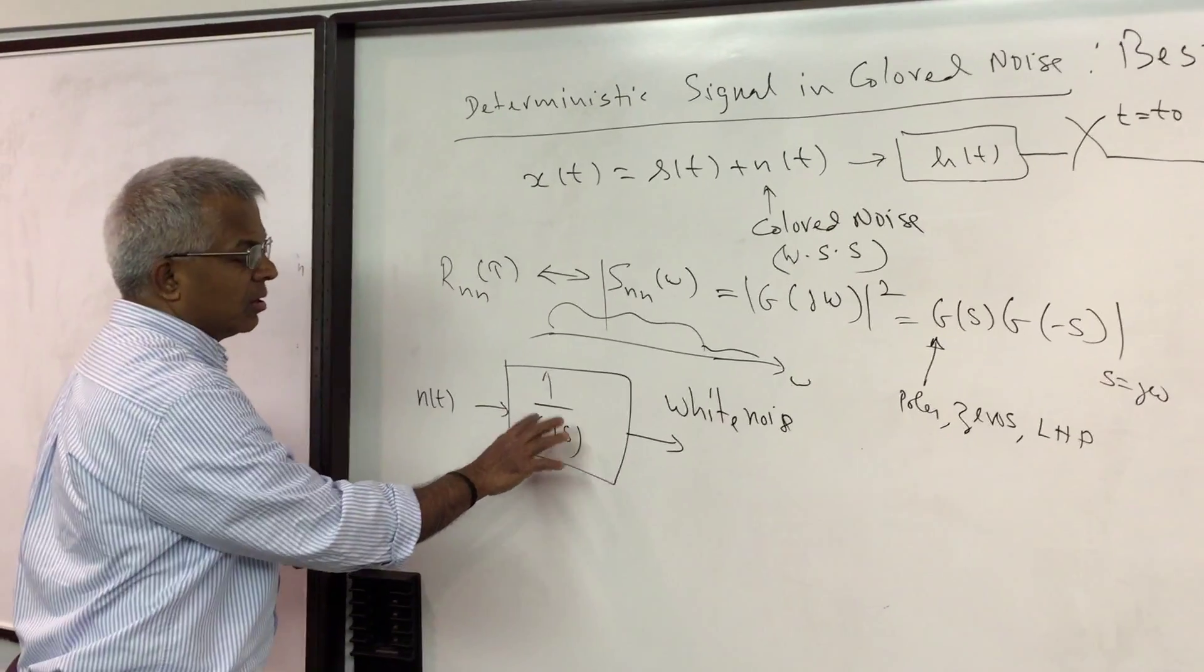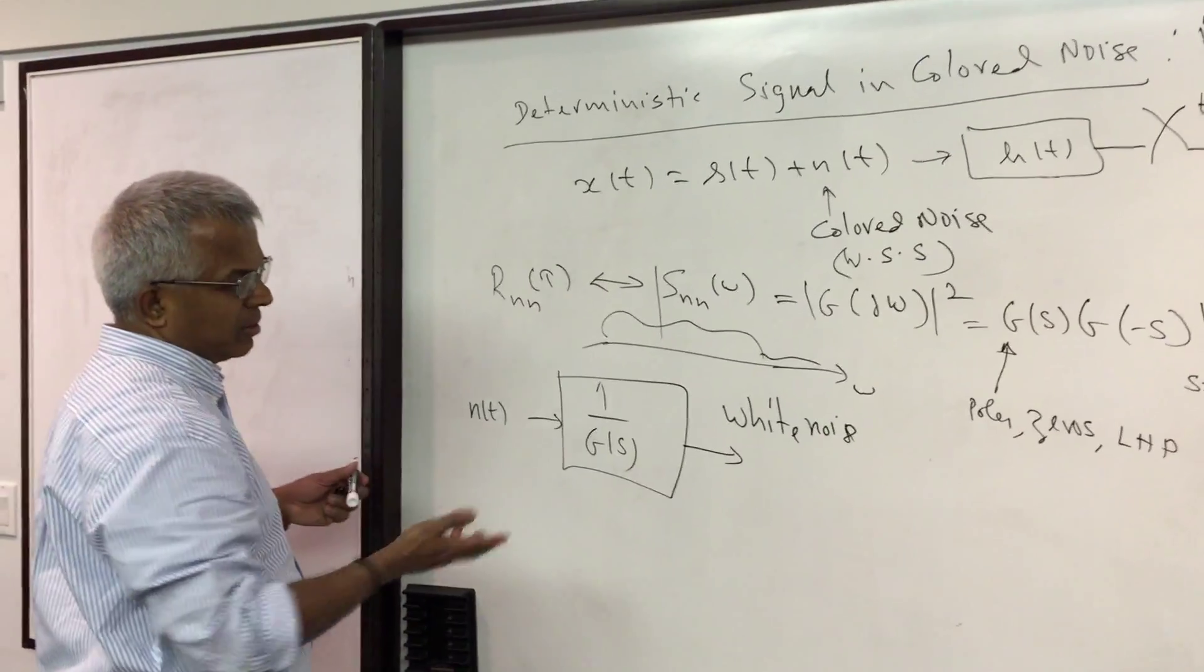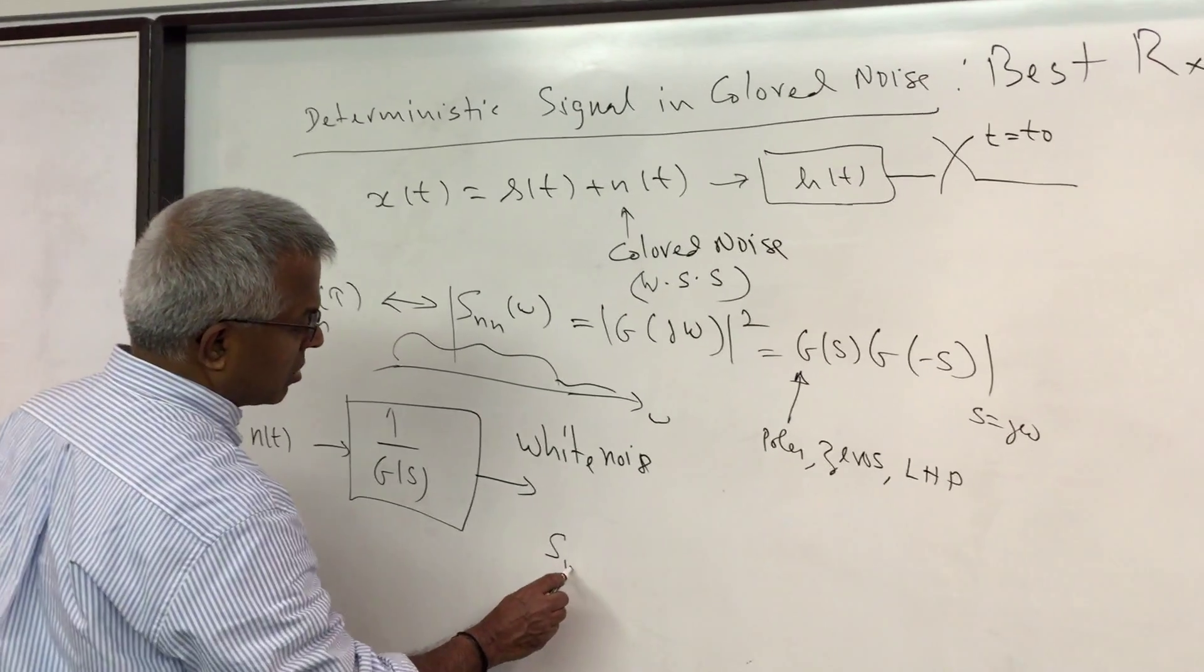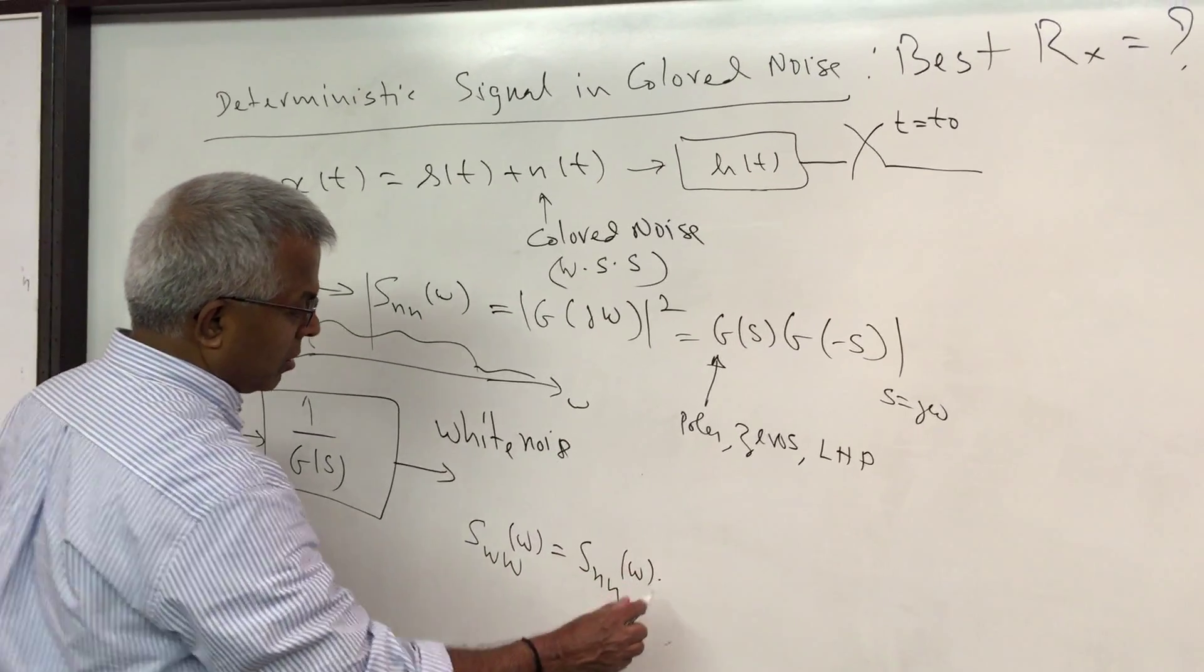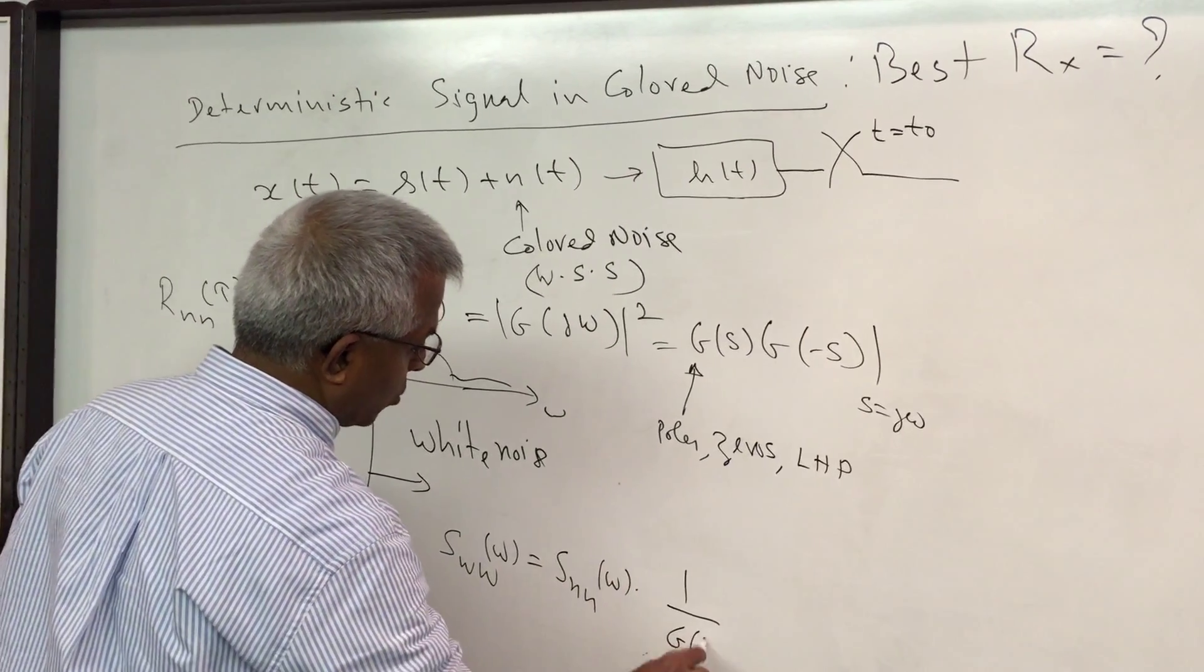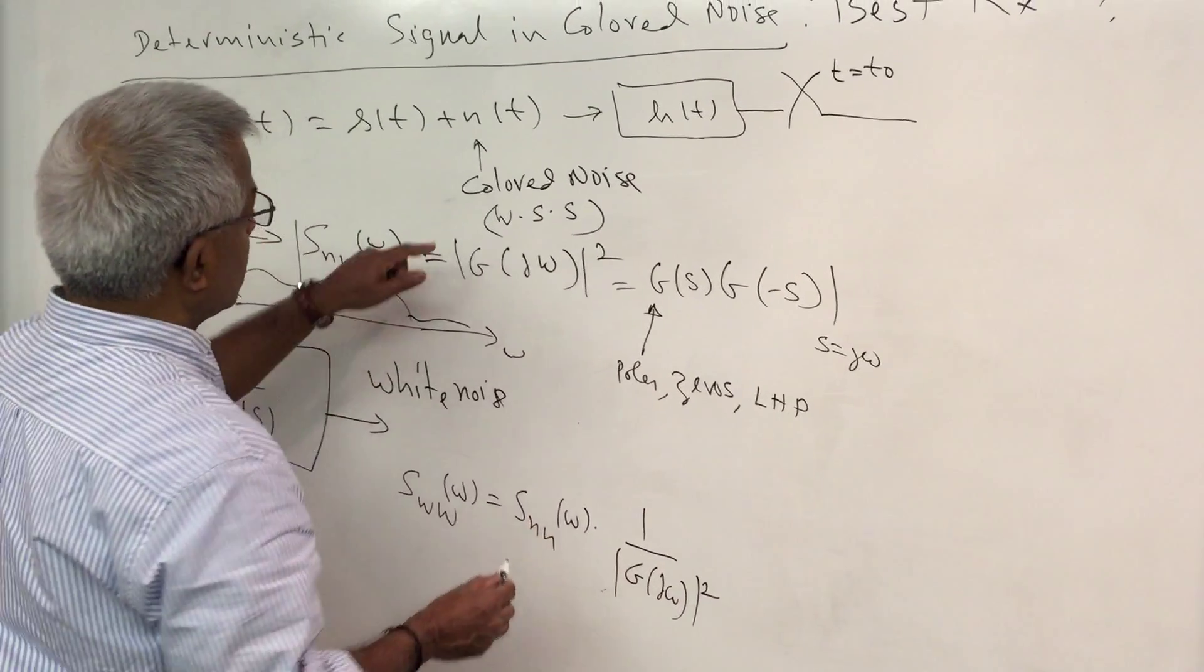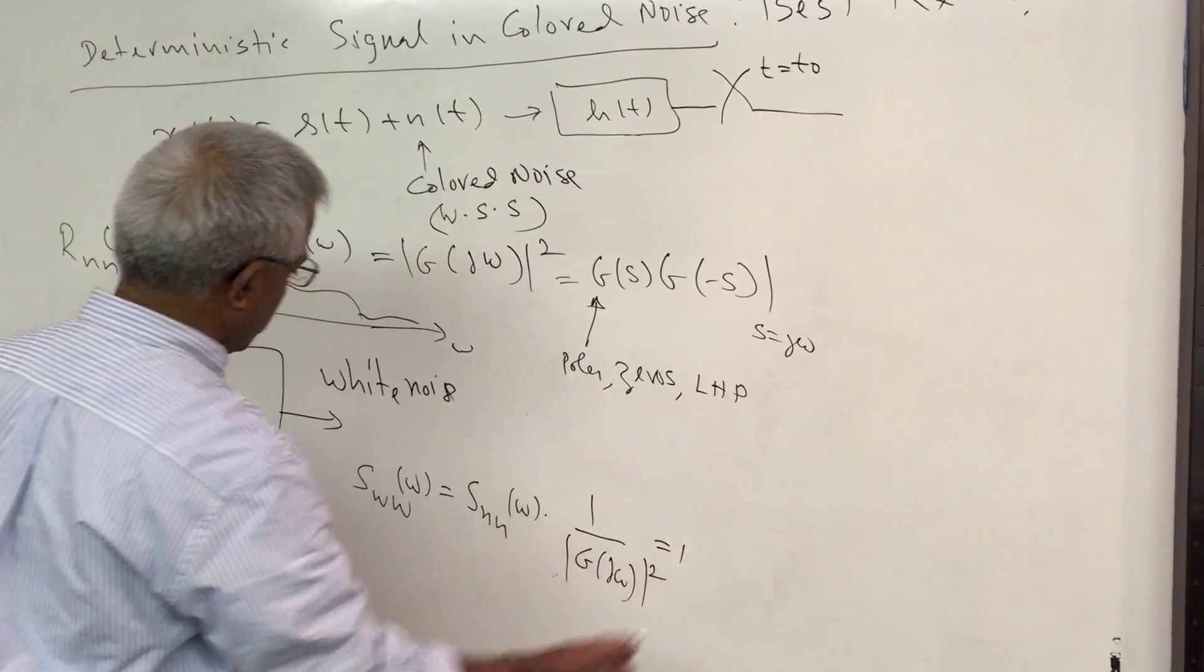Since the power spectral density here is 1 over G(s) squared and G(s) squared is equal to S_NN(ω), you can see the output power spectral density is S_NN(ω) multiplied by 1 over |G(ω)|². But this is |G(ω)|² itself, so you can see this will turn out to be 1.